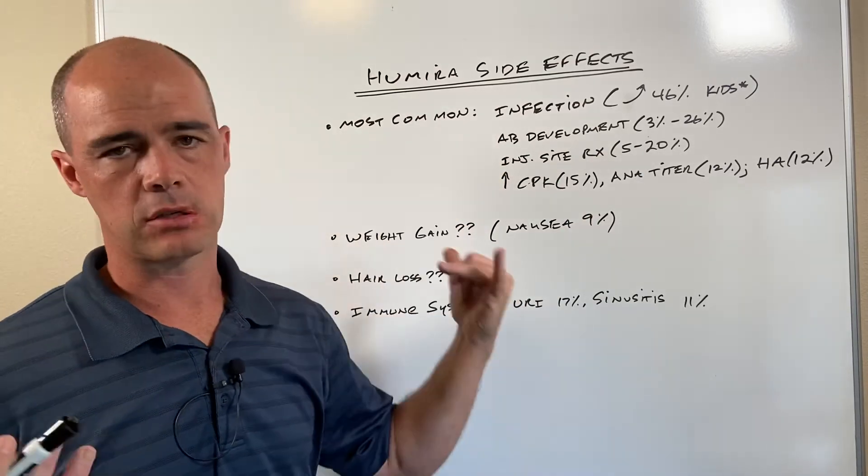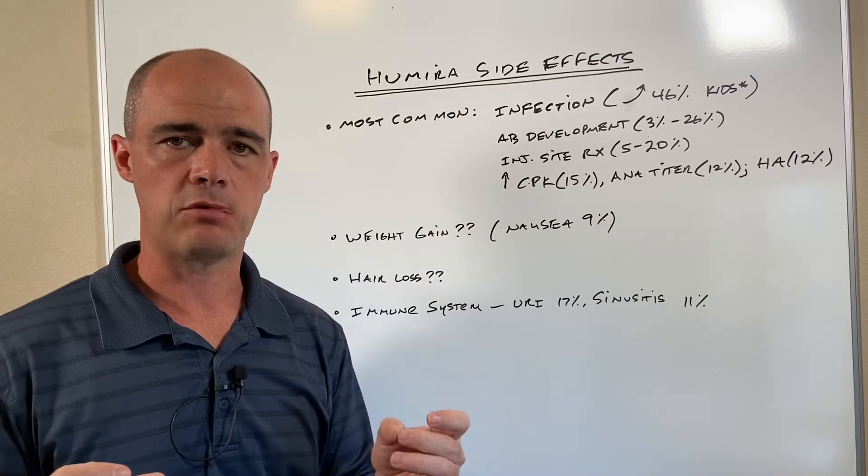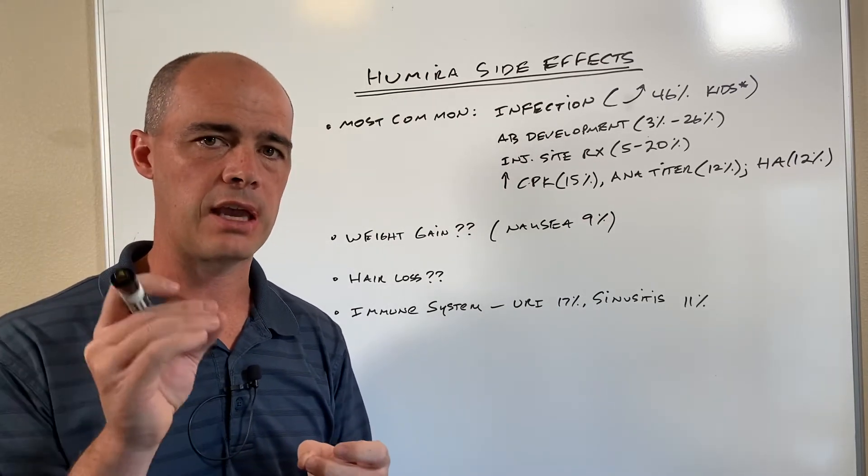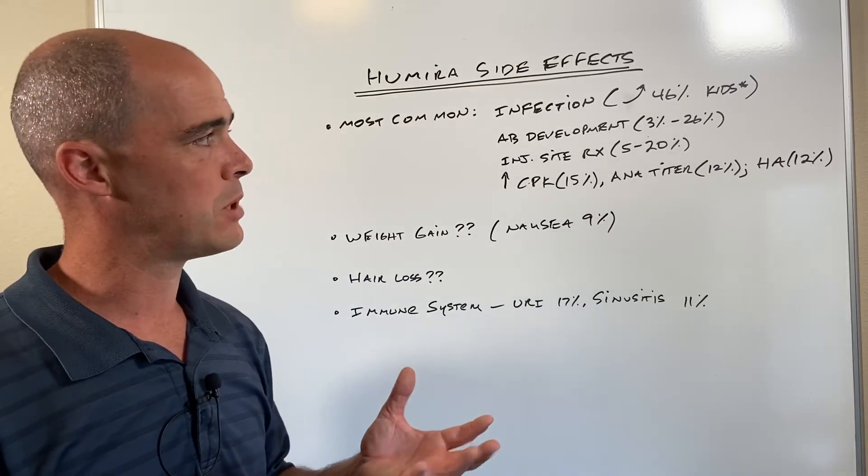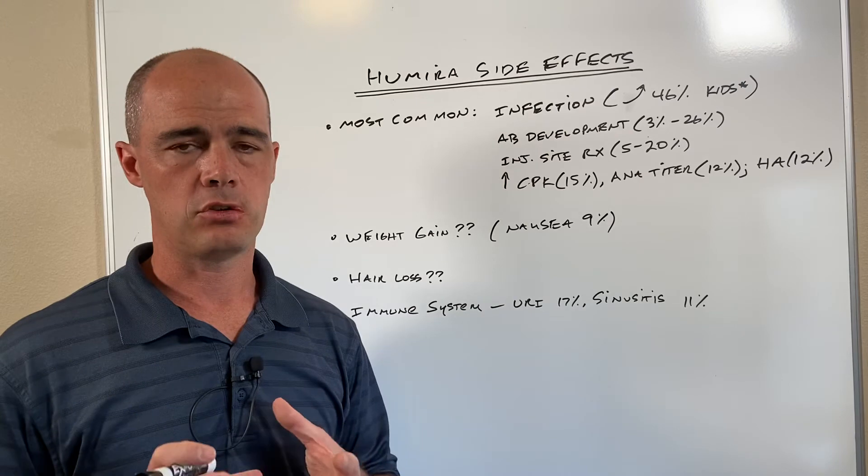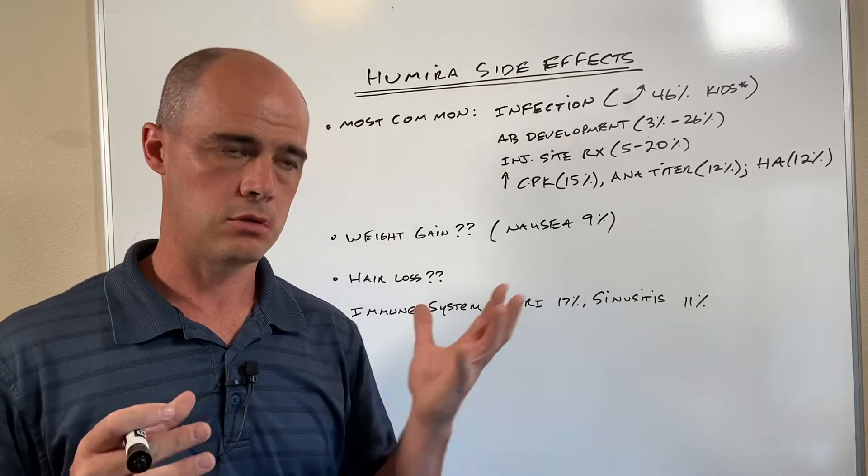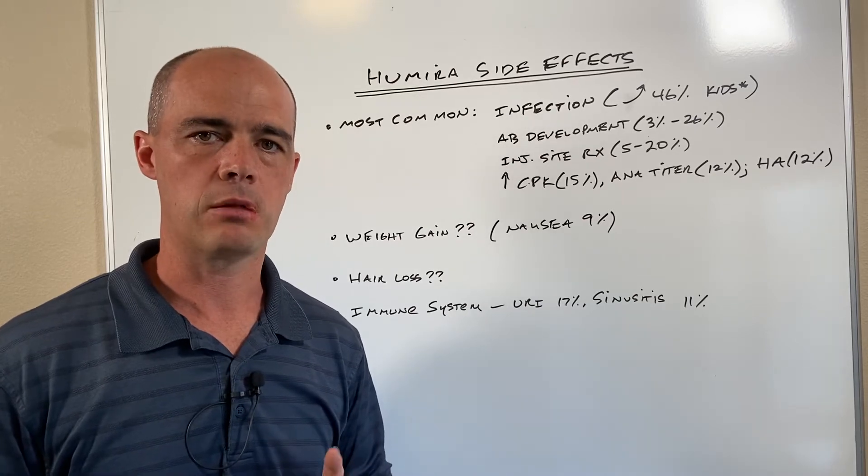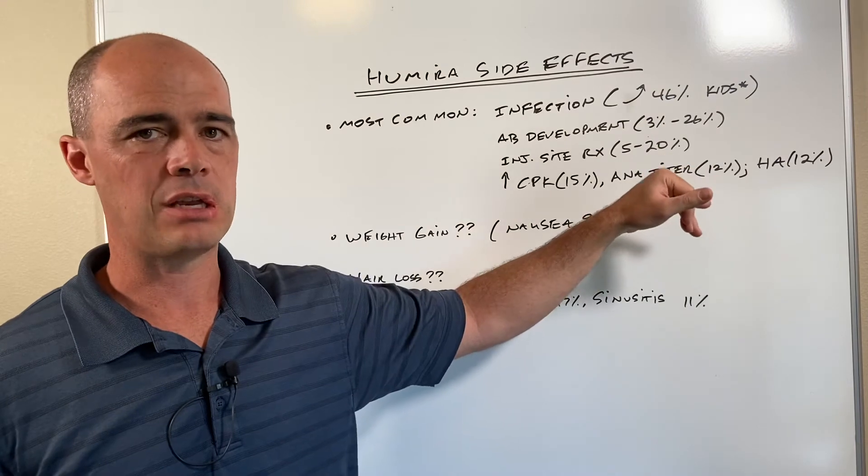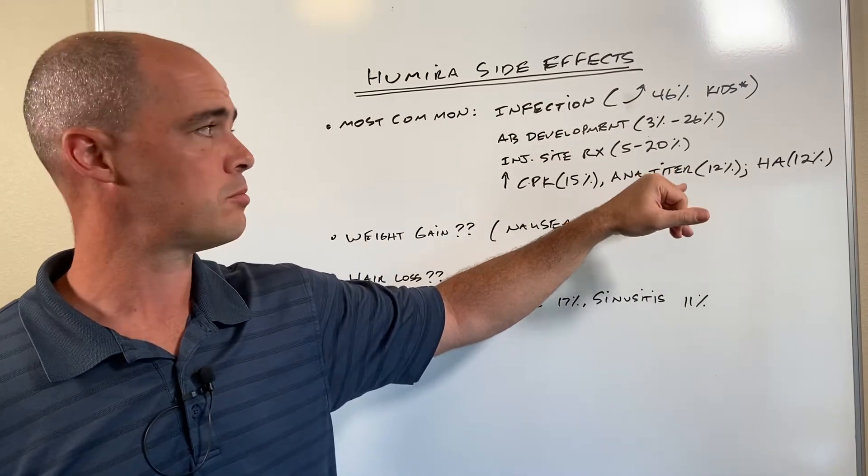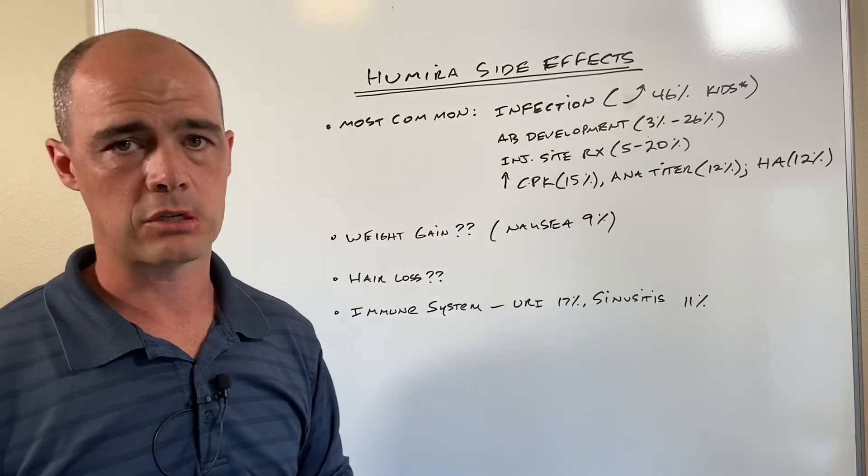AB development—I shorten that for antibody development. I've mentioned this in other videos. When you give these medications, your body can develop antibodies to the medication. In some cases, you'll develop what are called neutralizing antibodies, which essentially make Humira ineffective. The range varies depending on the study and the types of antibodies being developed, but it is a risk in up to 25 to 26% of folks.